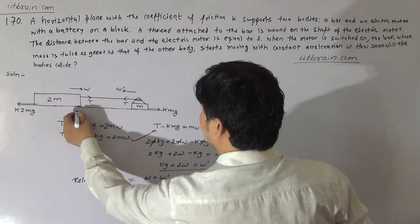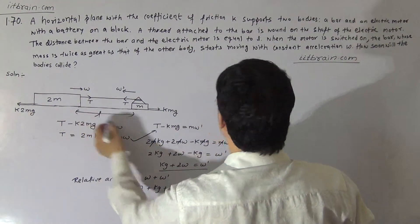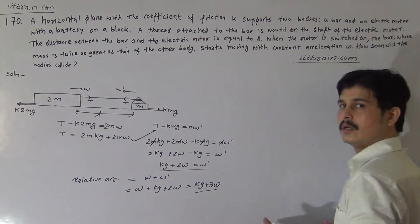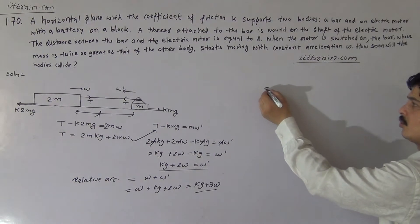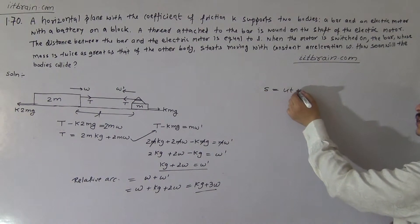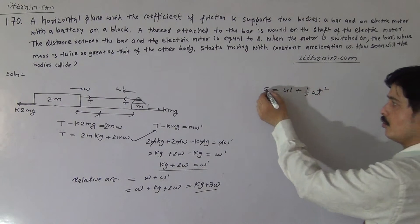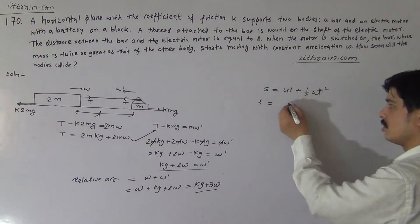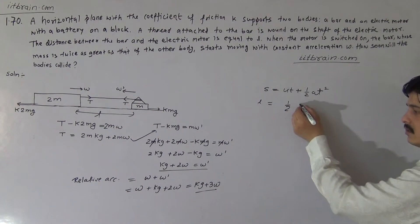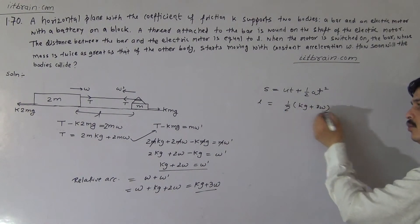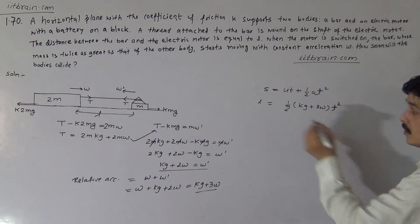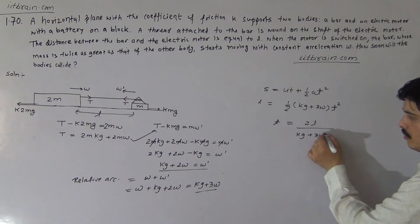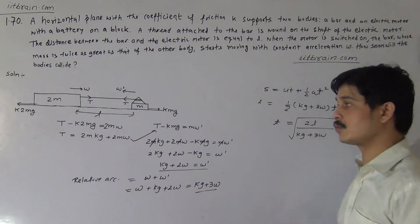The initial distance between the two bodies is l, as given in the problem. By Galileo's kinematic equation: s = ut + ½at². Putting in the values: s = l, initial speed of both systems is zero, so l = ½ × (kg + 3w) × t². Therefore, the total time taken is t = √(2l / (kg + 3w)).